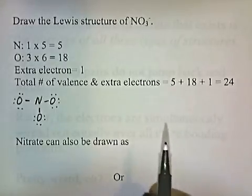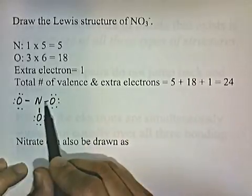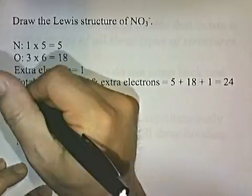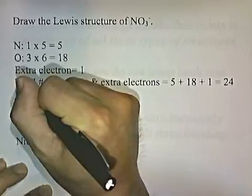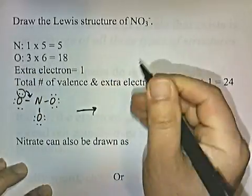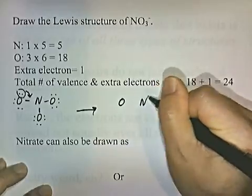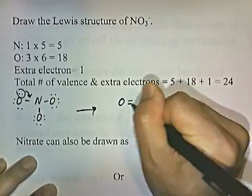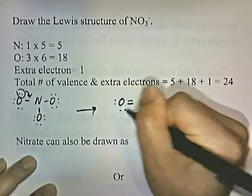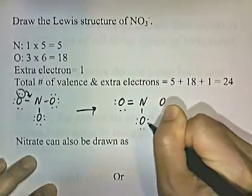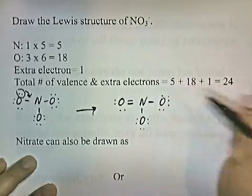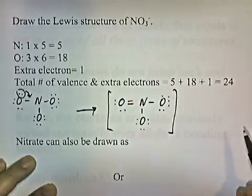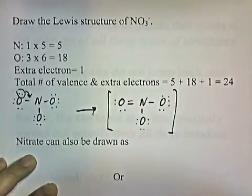Nitrogen only has 6 electrons around itself. So what we want to do is take 2 electrons and move them in between to form a double bond. If we do that, we get a new structure where all the oxygens have 8 electrons around them, and nitrogen now has 2, 4, 6, 8 electrons around it. So it's happy.